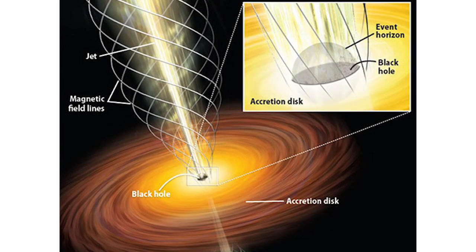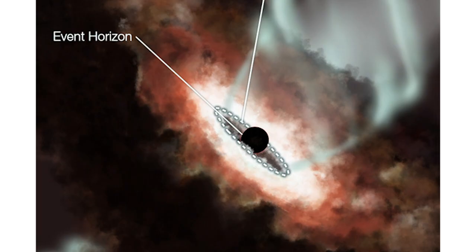For a black hole, this Schwarzschild radius is its event horizon. That's why you cannot see anything inside the event horizon, because light itself cannot travel back out of the event horizon, as the escape velocity past the event horizon is more than the speed of light.